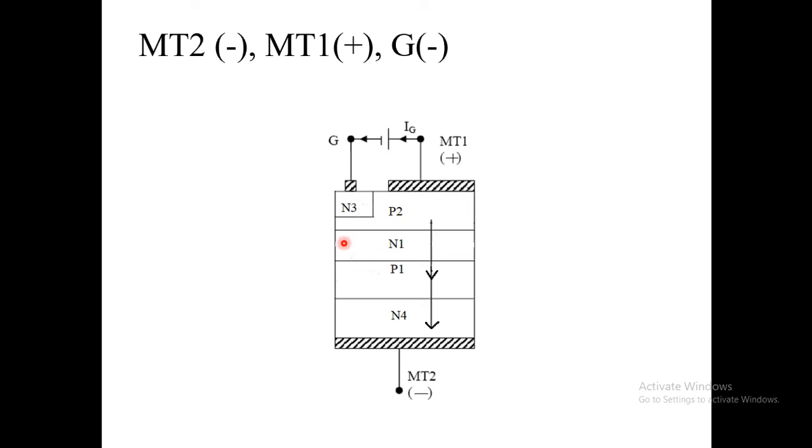...this gate will work as a remote gate to forward bias the junction N1P1. Because in this case, N1 layer is directly not connected to N3 layer or gate, or in other words, we can see that N1 is not directly connected to gate. But remotely, the negative gate current turns on or forward biases junction N1P1. That's why this gate is called as remote gate.